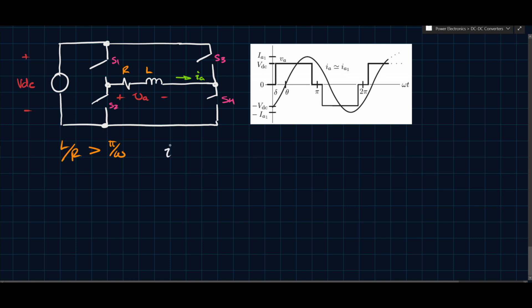We can write it as a time-varying function, approximately equal to IA1, which is the amplitude of the fundamental component, and we'll say sine omega-t minus theta. And theta is this angle, the phase shift.